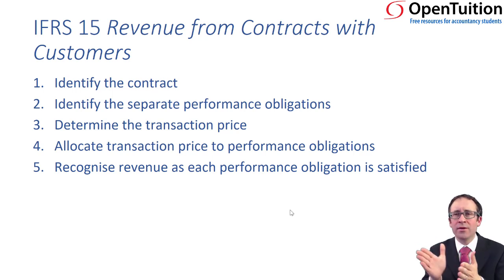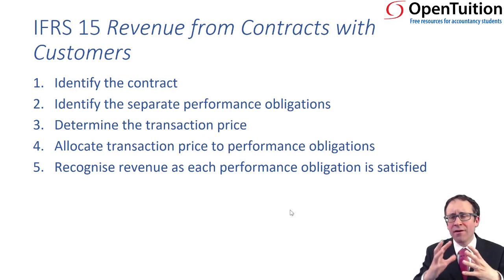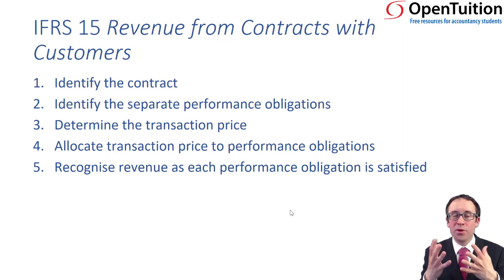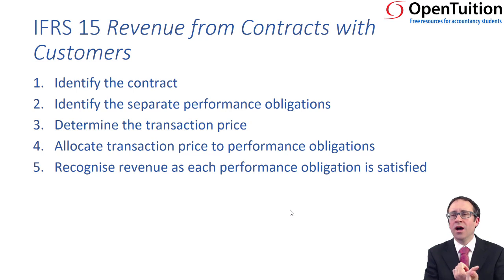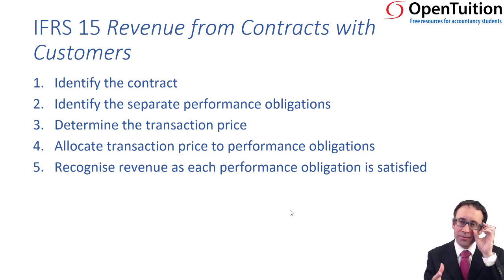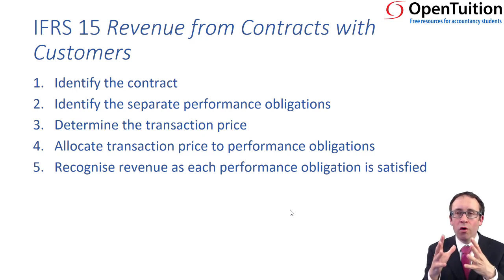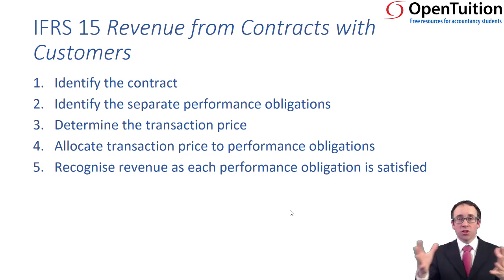The obligation could be very simplistic — just one obligation to construct an asset on behalf of our customer, such as building their head offices. Or it could be that there are several different obligations within it. If you're looking at computer businesses, maybe they are providing installation, maybe they are providing support and maintenance. So we might need to split out those obligations in order to recognise the revenue. Once we've split out those obligations, we then need to look at the overall price that we're going to split out.